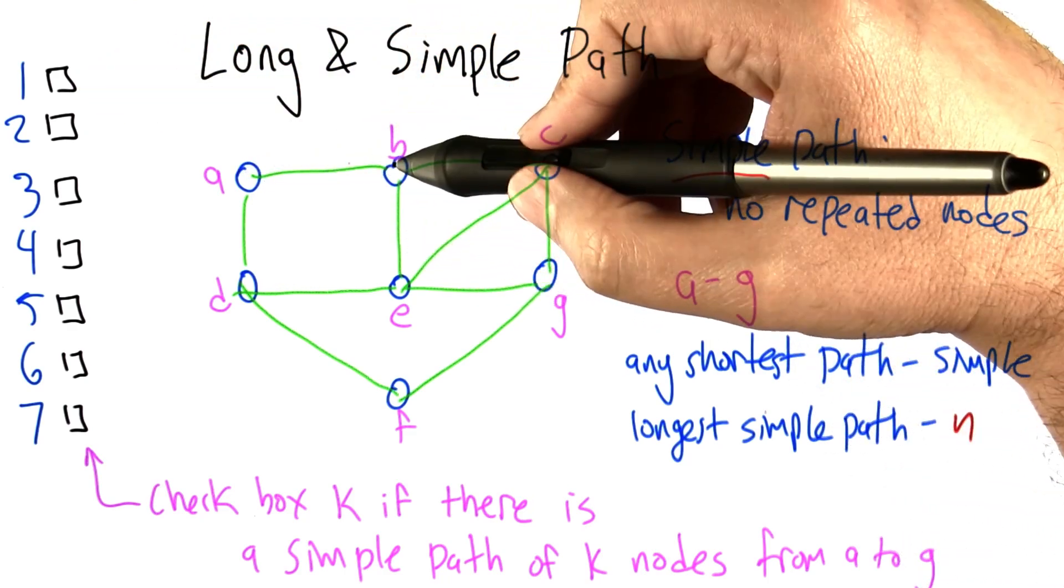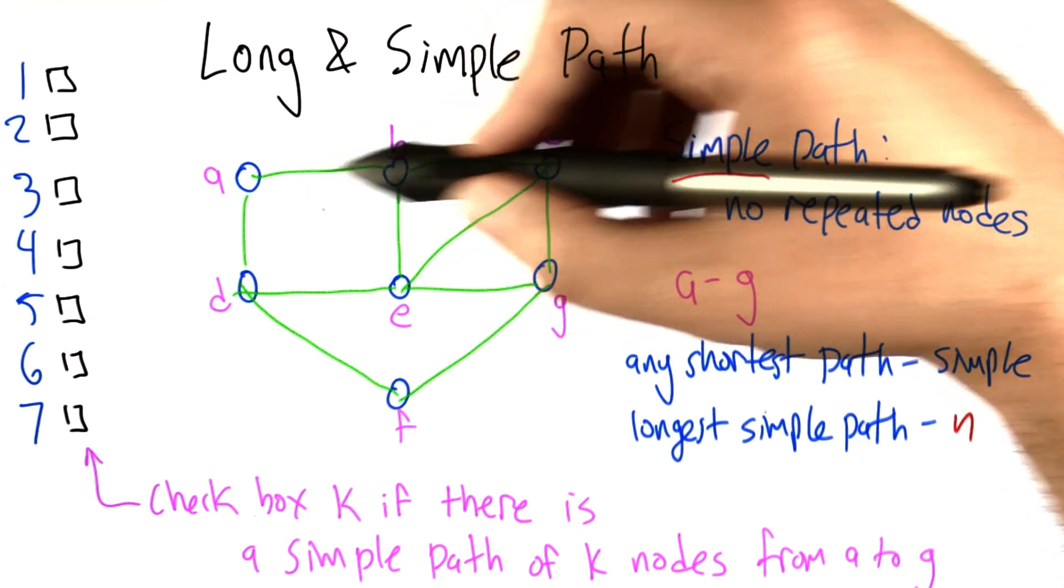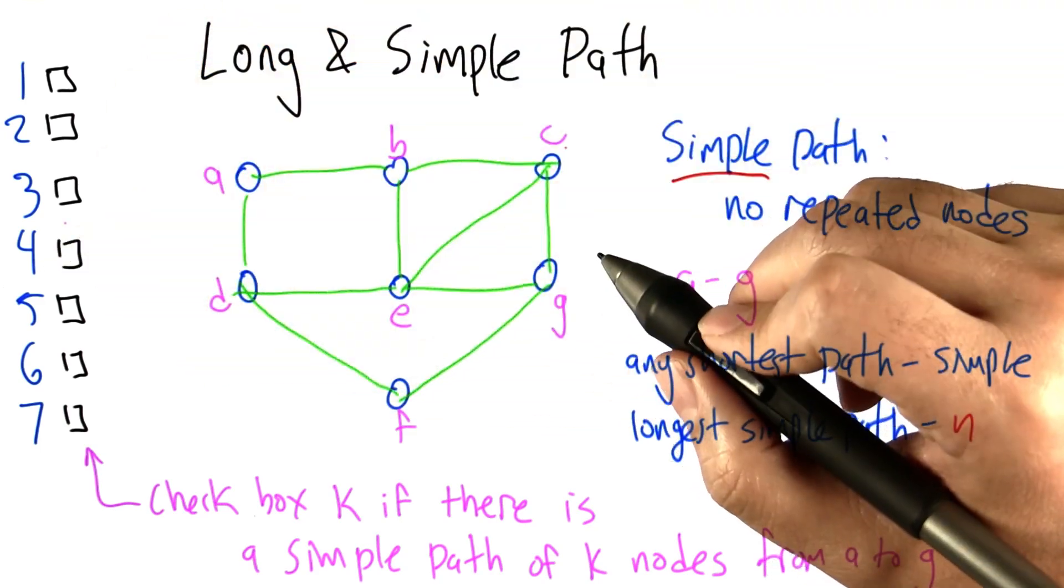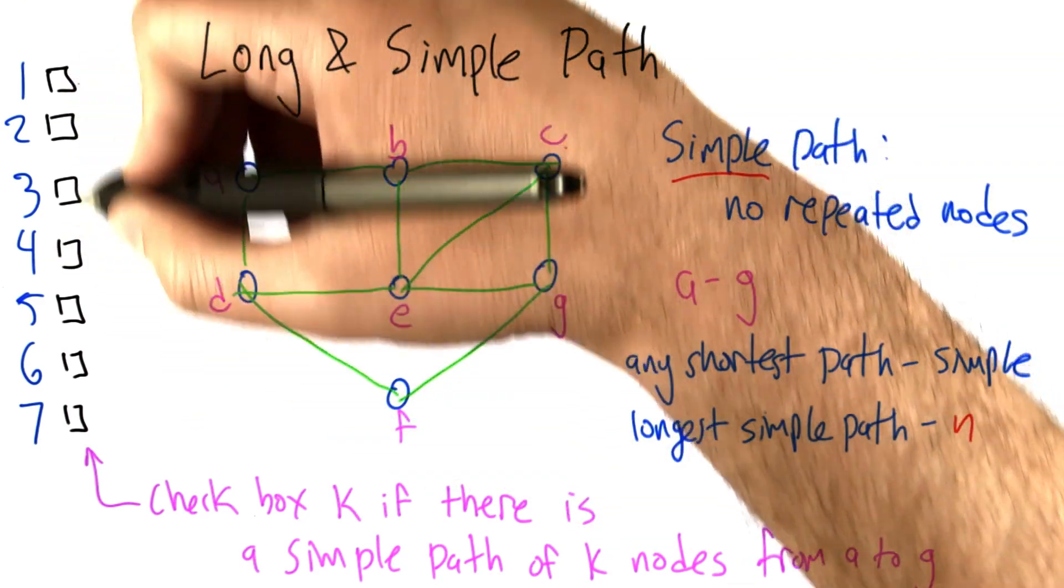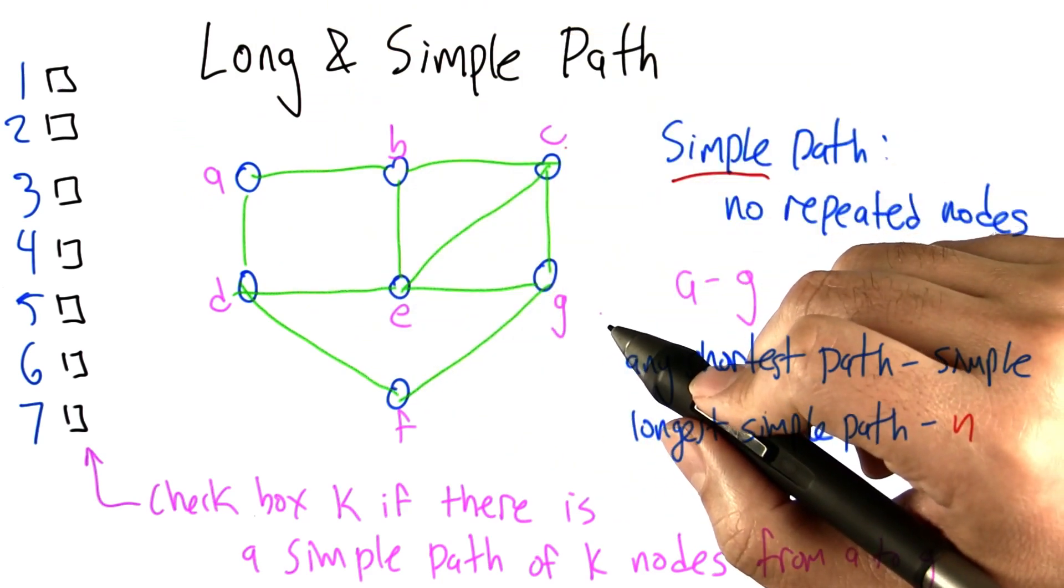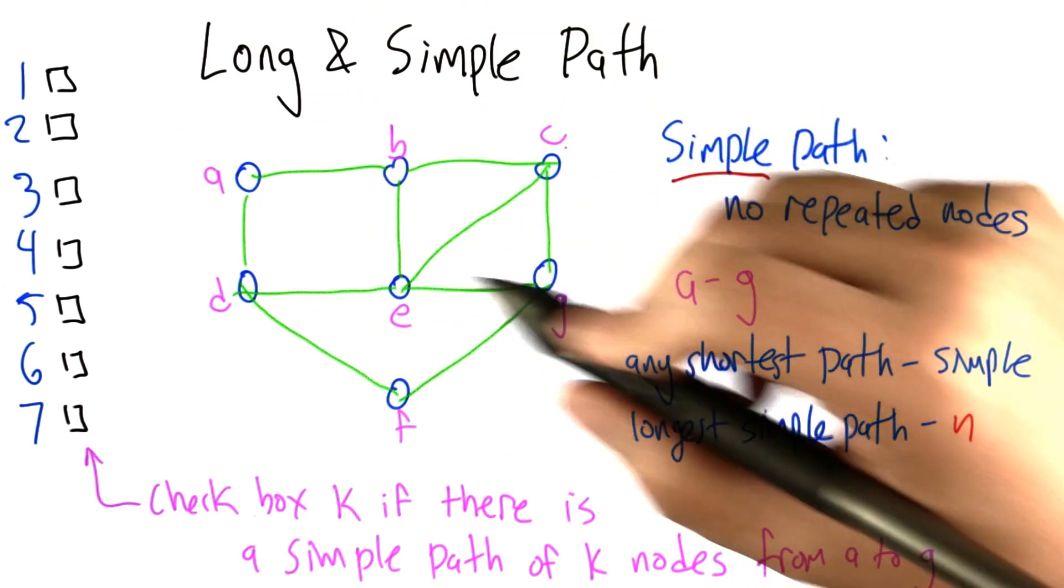And we already saw a path A, B, E, G that's a simple path that has 4 nodes on it, so we'll give you 4. For each possible length, check the box if there is a simple path with that number of nodes on it from A to G.